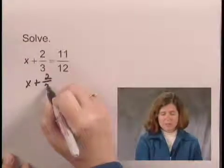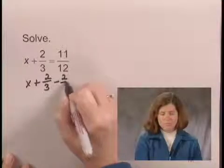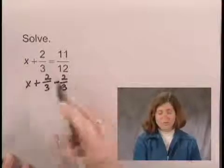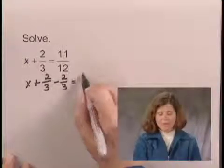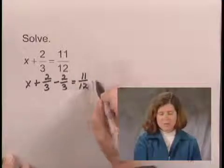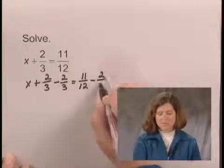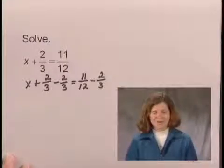x plus 2/3 minus 2/3, subtracting 2/3 on the left side of the equal sign, equals 11/12 minus 2/3, subtracting 2/3 on the right side of the equal sign.